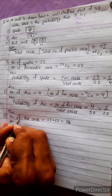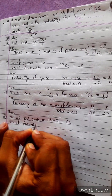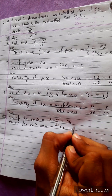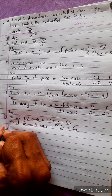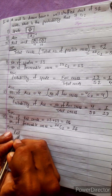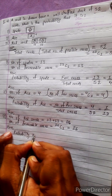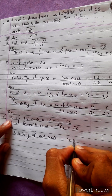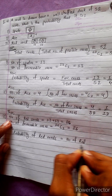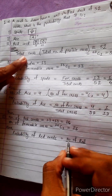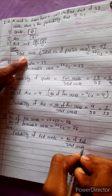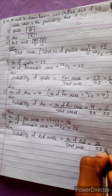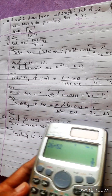Number of favorable cases equals number of red cards. Probability of red card equals number of favorable cases divided by total cards. Number of red cards is 26, total cards is 52. This gives 1 by 2. Yes, absolutely 1 by 2.